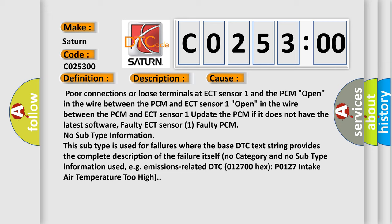This subtype is used for failures where the base DTC text string provides the complete description of the failure itself. No category and no subtype information used, e.g., emissions-related DTC 012700 hex P0127 intake air temperature too high.